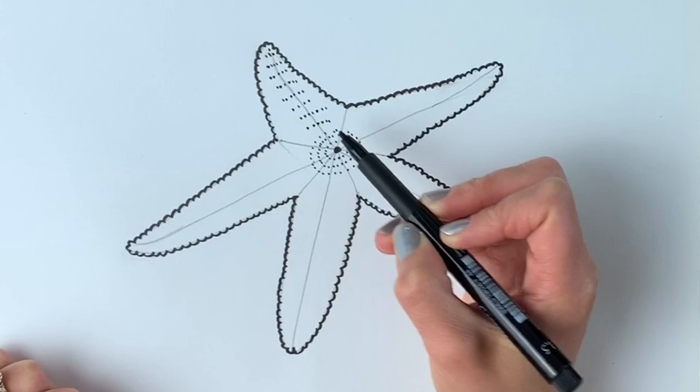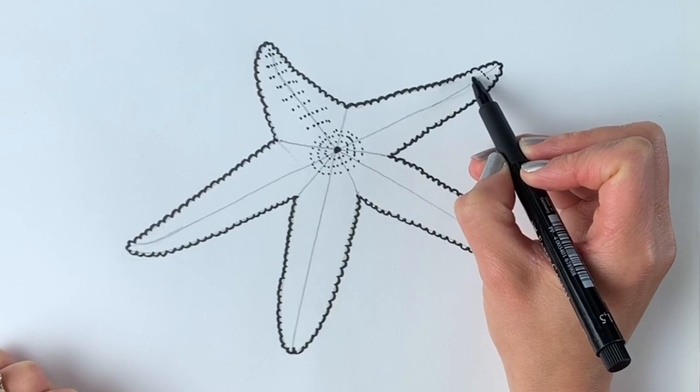Okay, and then we're going to do the same on this one. So little dots in a line, kind of the same distance that we did these lines going across.